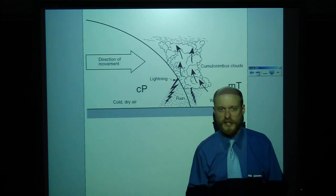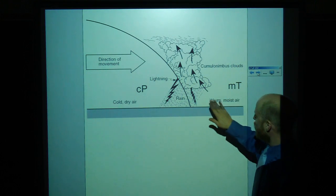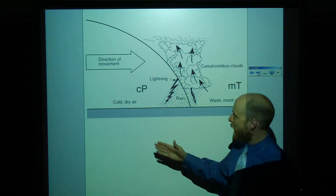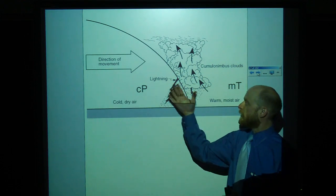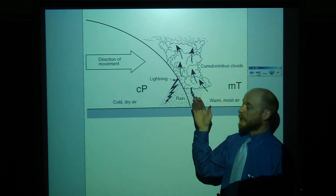Fronts, weather fronts. Here, we have a cold front. And what you have, this is CP, continental polar, coming into a maritime tropical air mass. Cold air moving into warm air. This is the front of cold air as it moves into warm. So, it's a cold front.